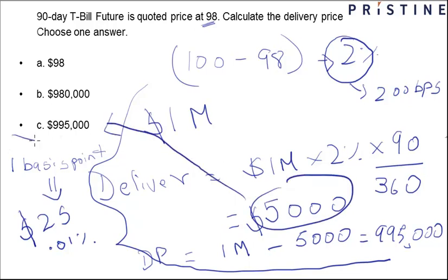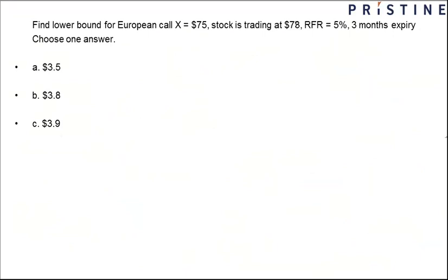Next, we shall see a simple question on options. The question here is: find the lower bound for a European call option which has a strike price of $75 and is trading at $78.